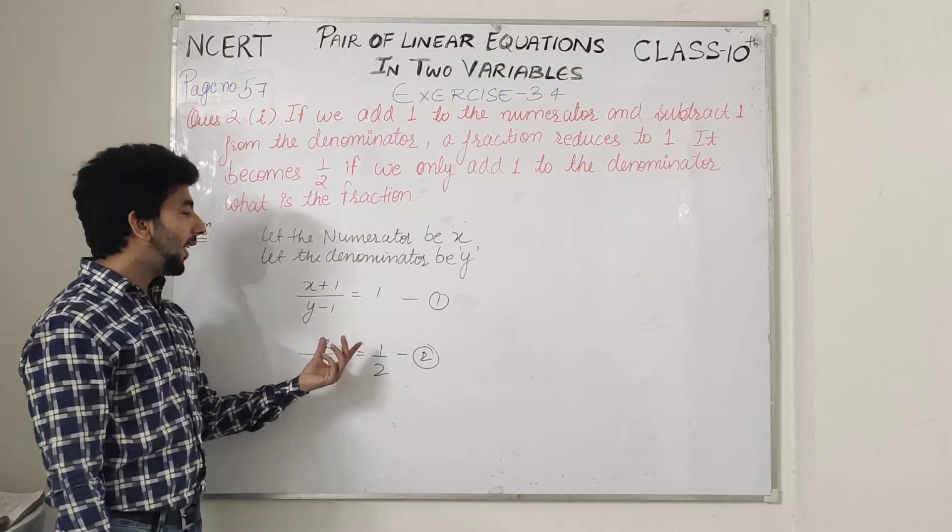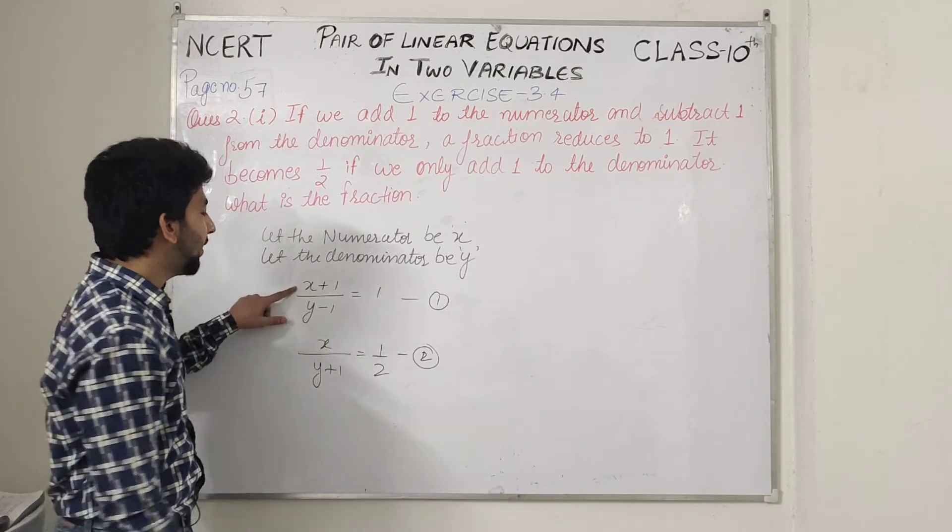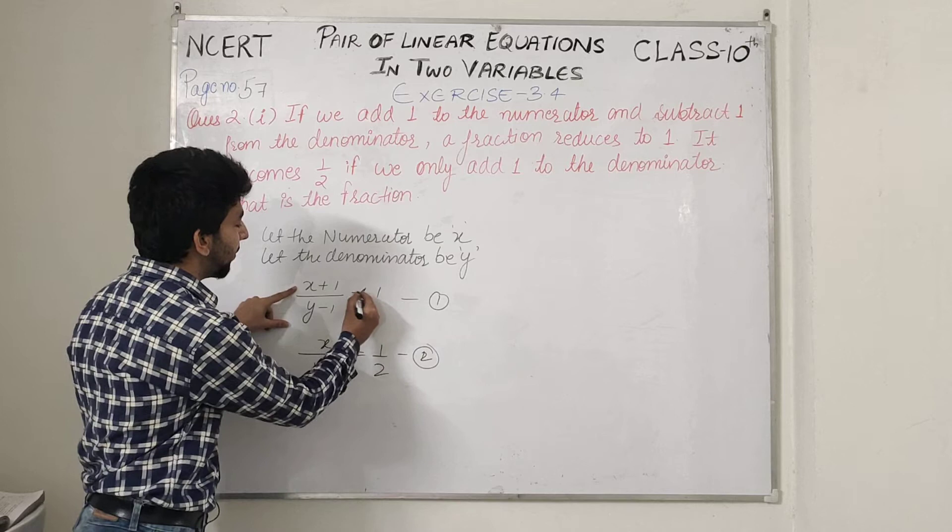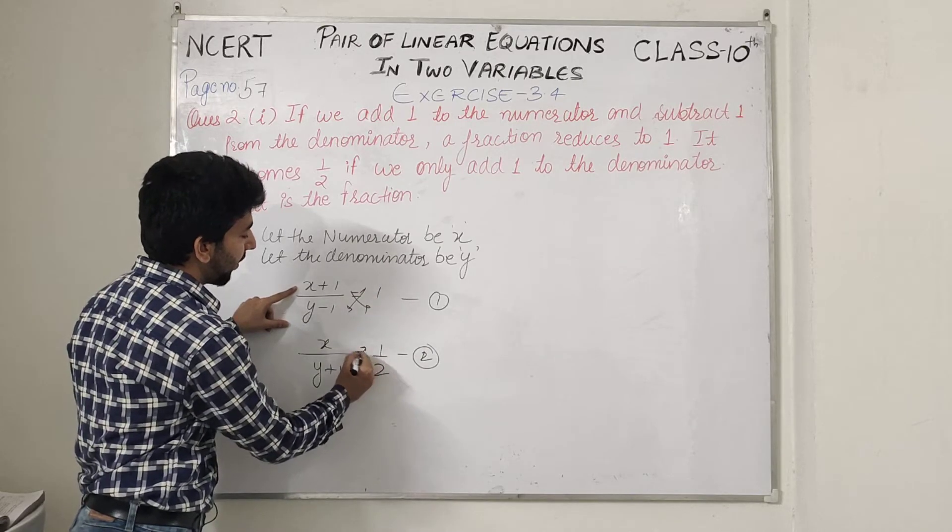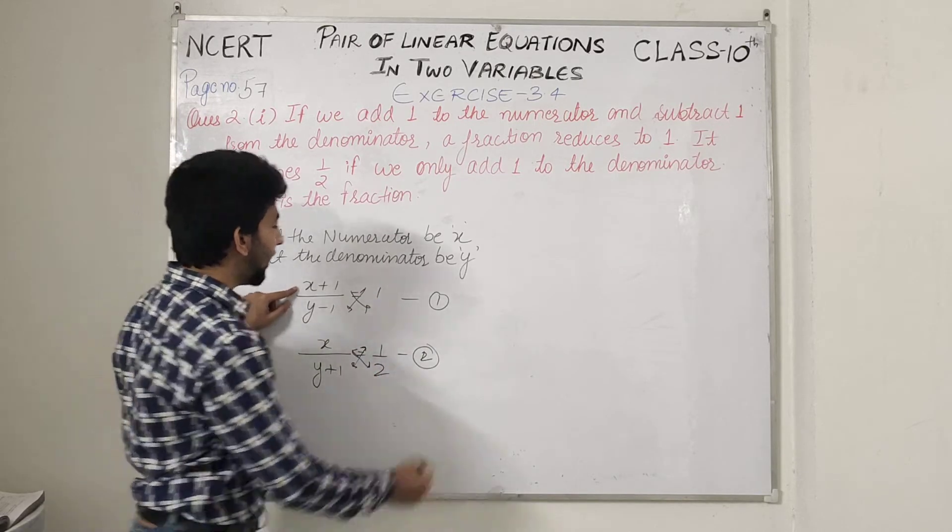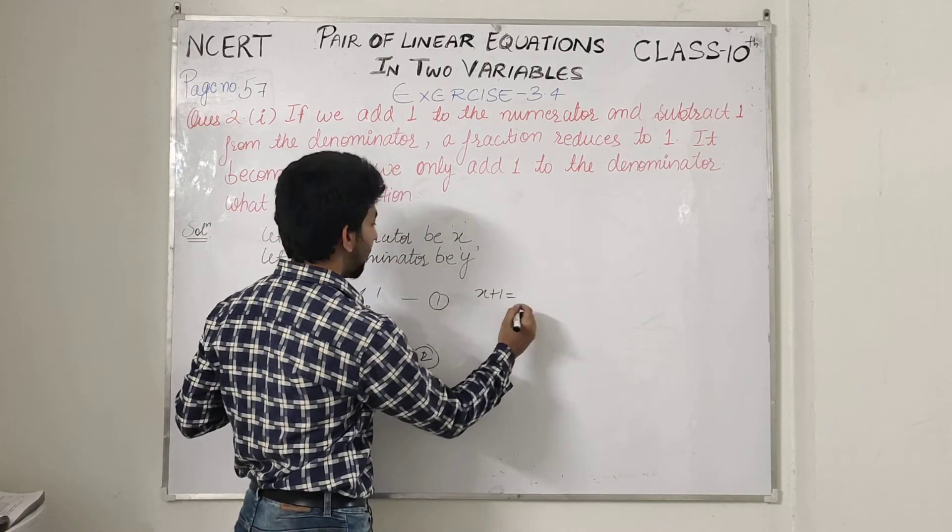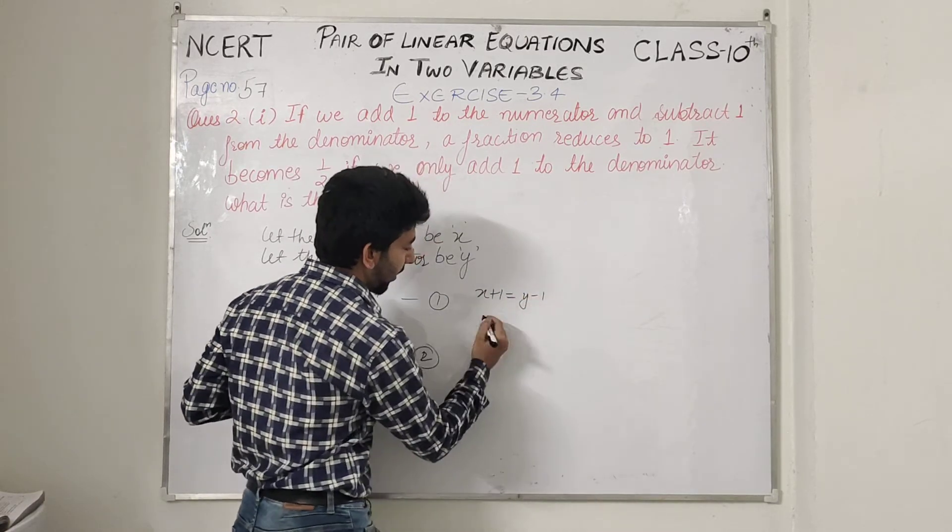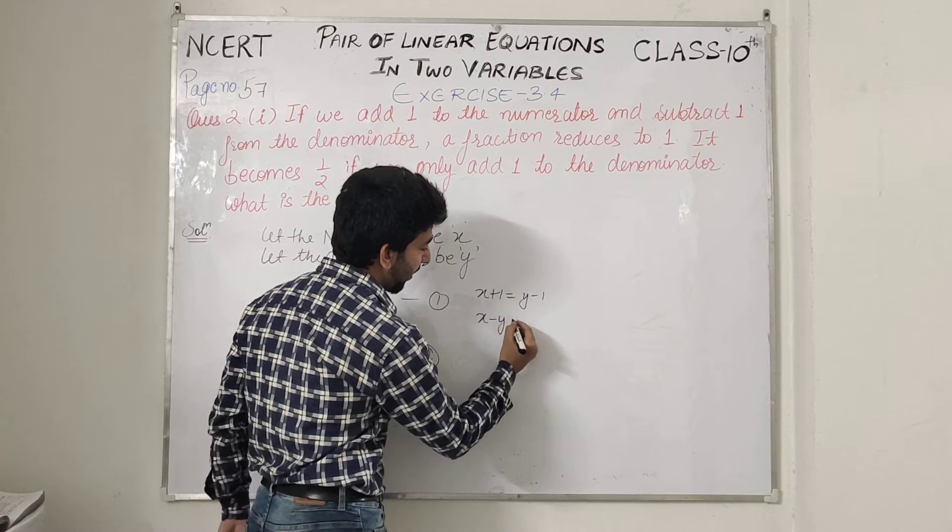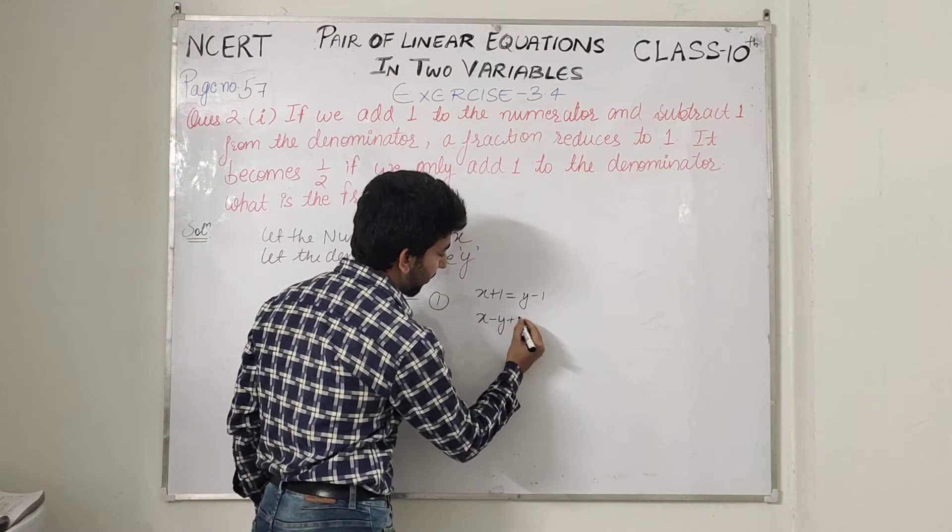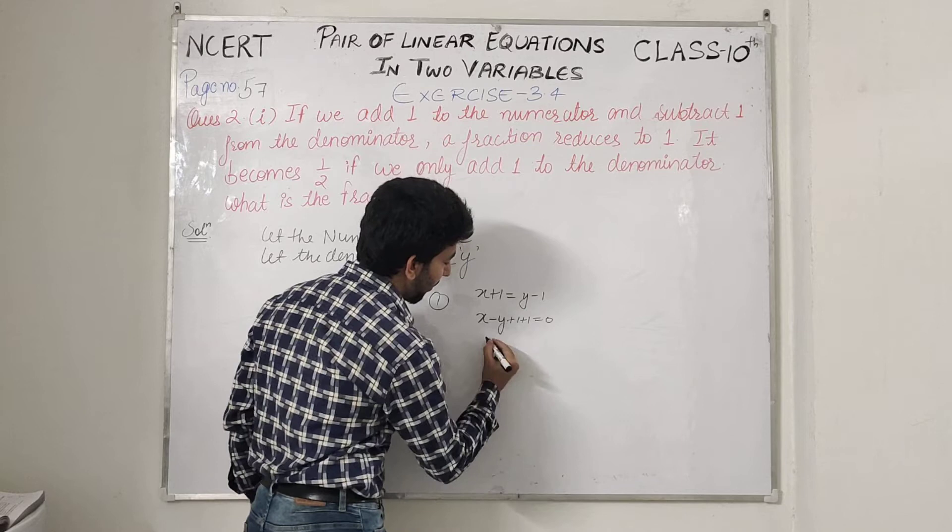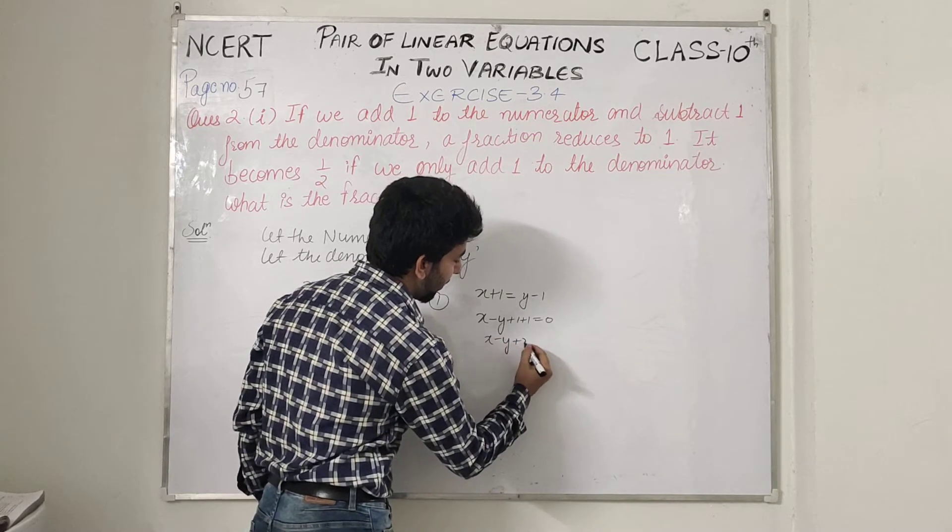From the second equation: y minus 1. X minus y plus 1 plus 1 equals 0. X minus y plus 2 equals 0.